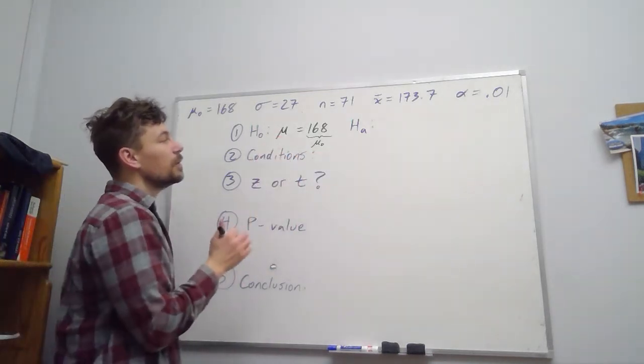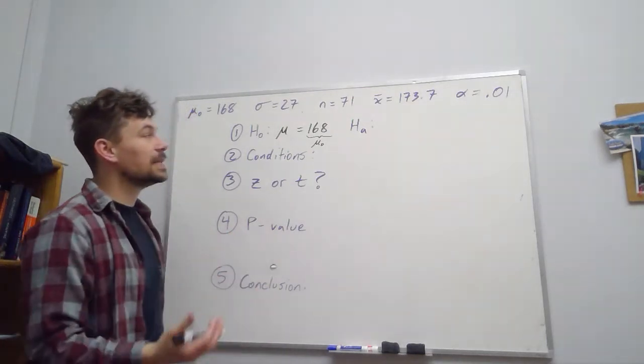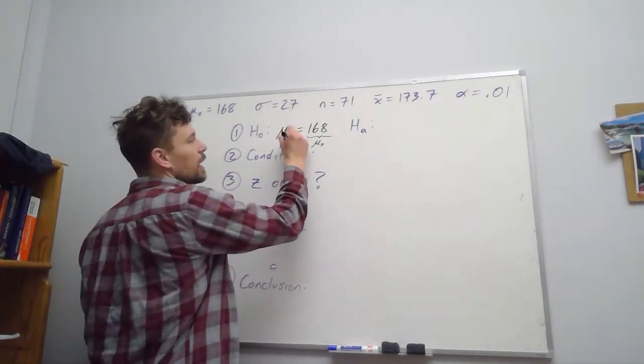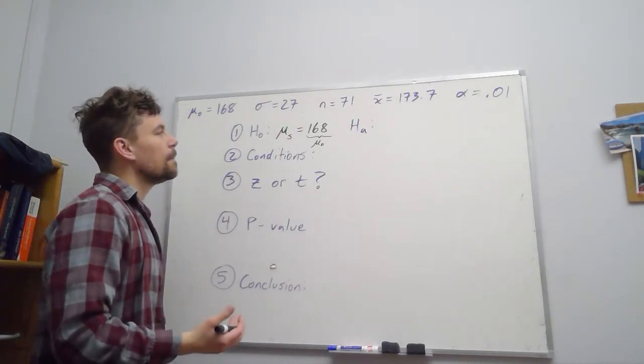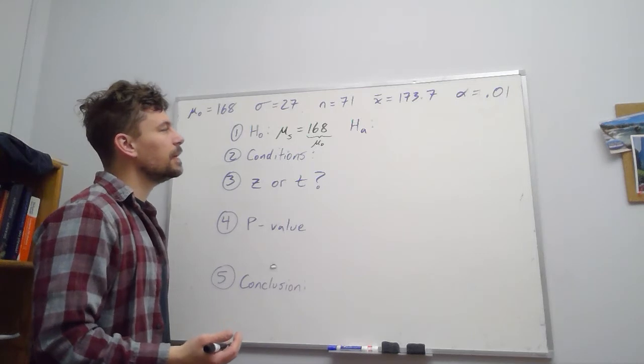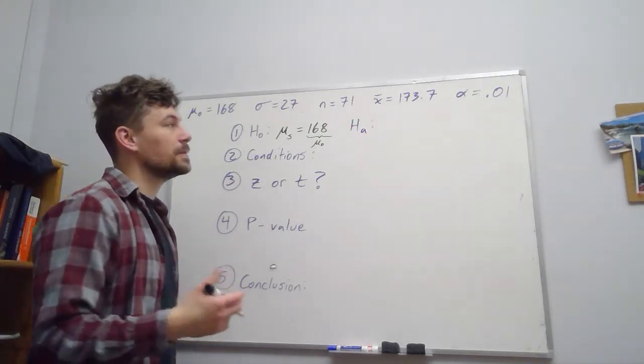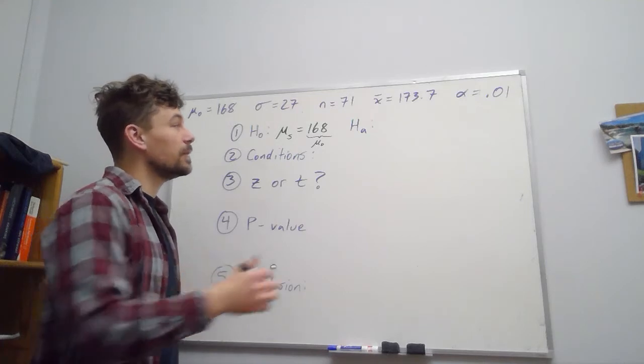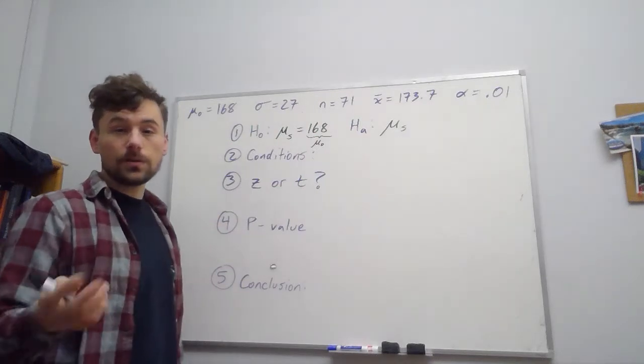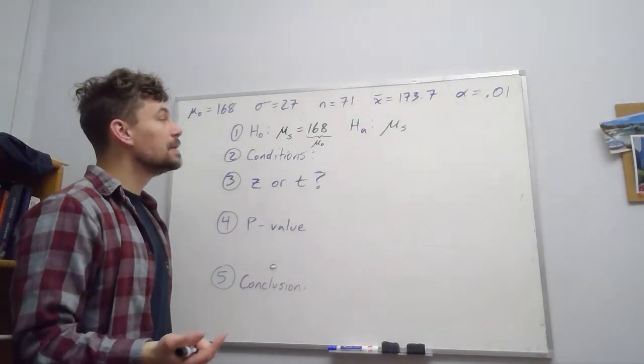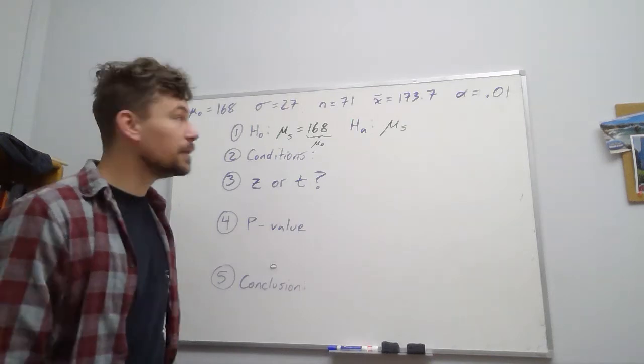And this μ that we're referring to is for sedentary folks who have a sedentary lifestyle. So we can say like μ_s if it helps to clarify that. There isn't explicit wording in the problem about whether μ_s is actually larger or smaller than this, but we are told it's one-sided. So we kind of have to think about the scenario.